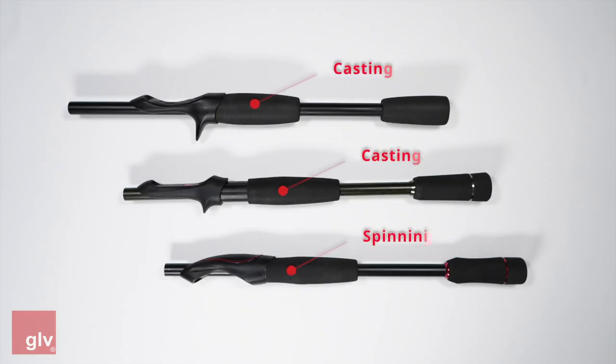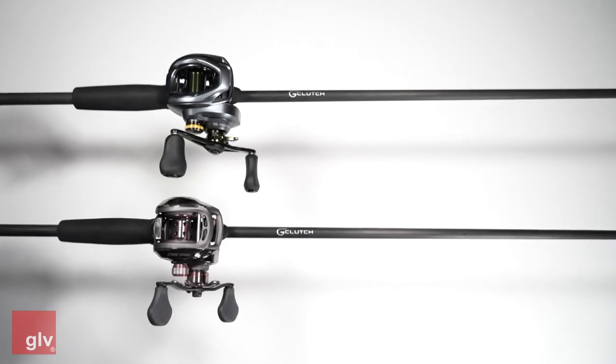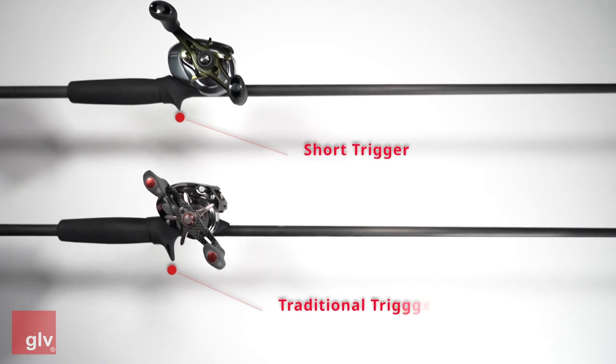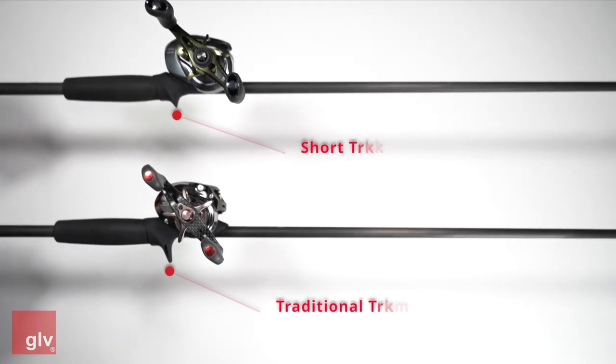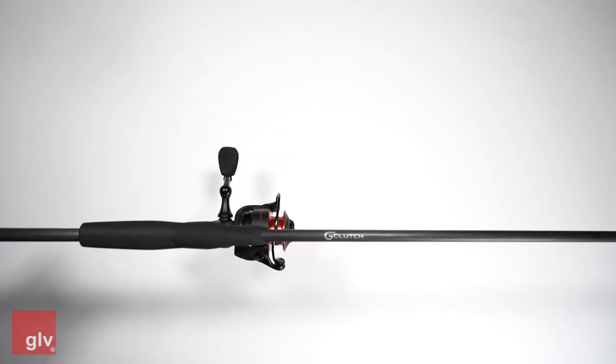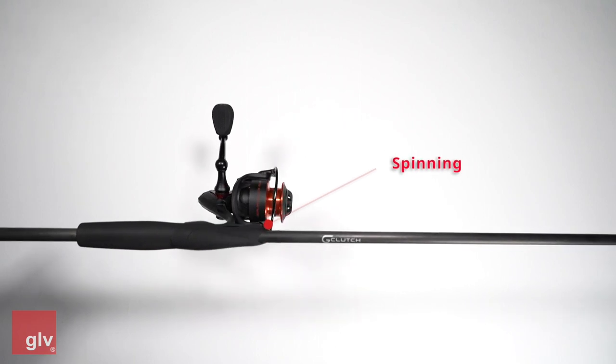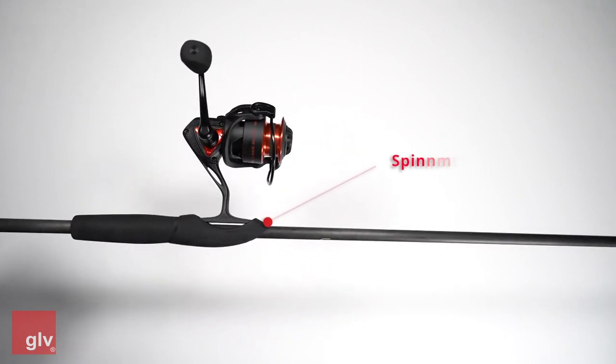The G-Clutch handle system comes in two casting and one spinning version. The casting version has two styles, the short trigger style and the traditional trigger style. The spinning version has only one style and is designed for all types of spinning rods.